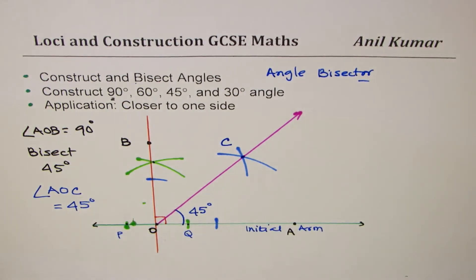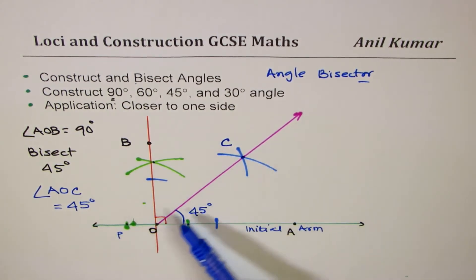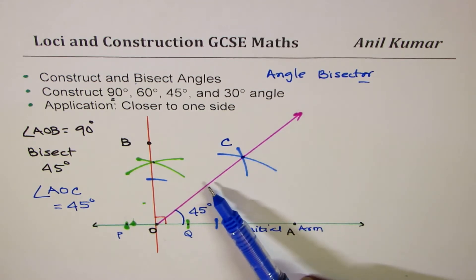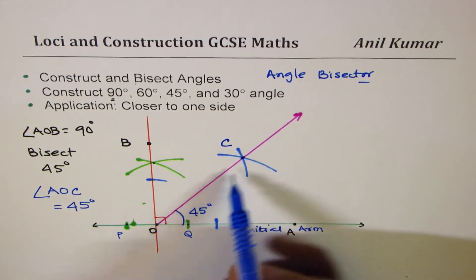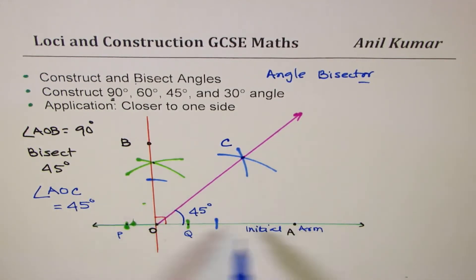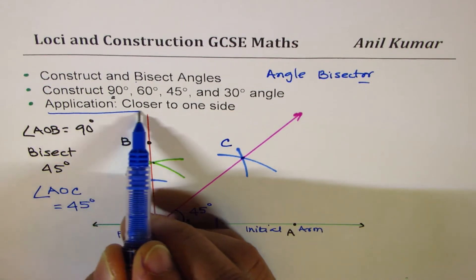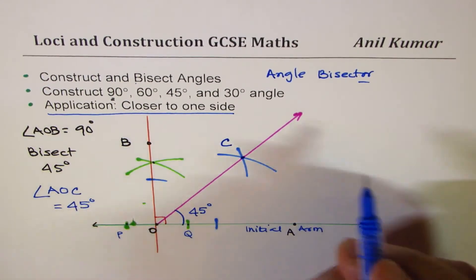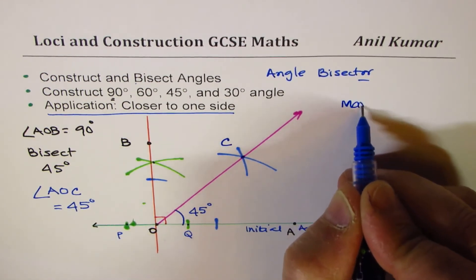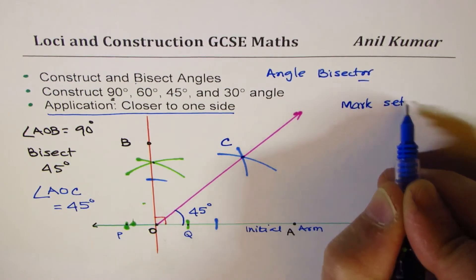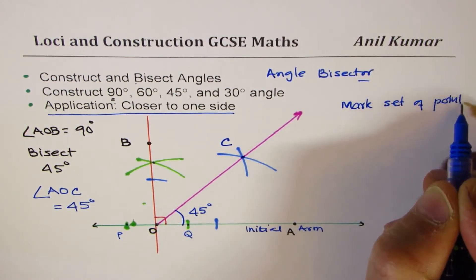That also means that every point on this line is the same distance from these two lines. So at times when we work with segments, we say that every point on this line is the same distance from the segment OA and segment OB. Now the question is, we're looking into application part, which is mark points closer to, let me write down here, mark set of points, that means locus.